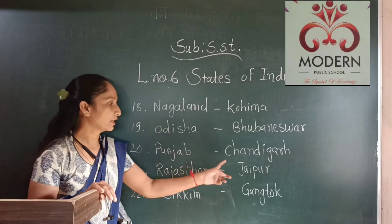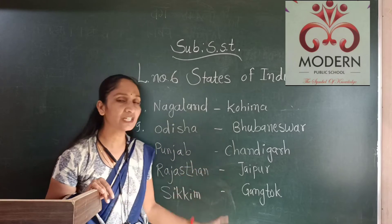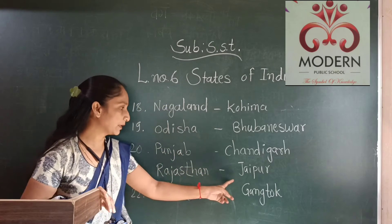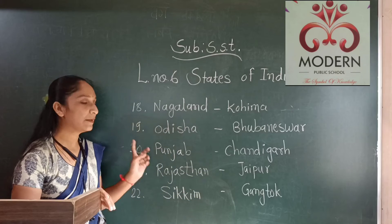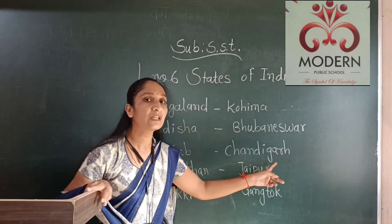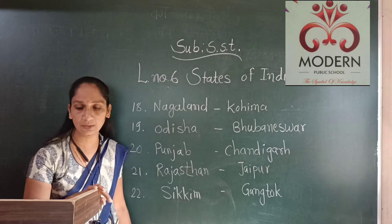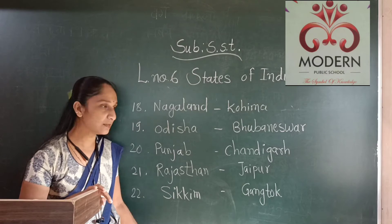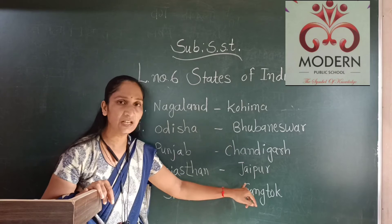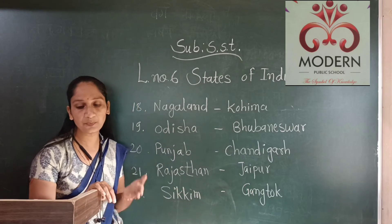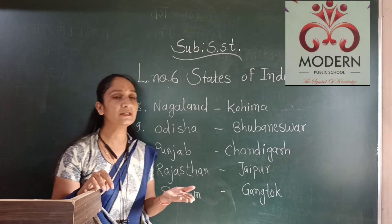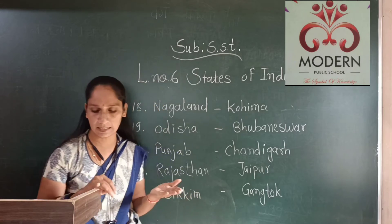Next, Punjab. Punjab's capital city name is Chandigarh. And Punjabi language is spoken by the people. Next, Rajasthan. Rajasthan's state capital city name is Jaipur, and the very famous spot is Hawa Mahal. Here people use Rajasthani and Hindi language.